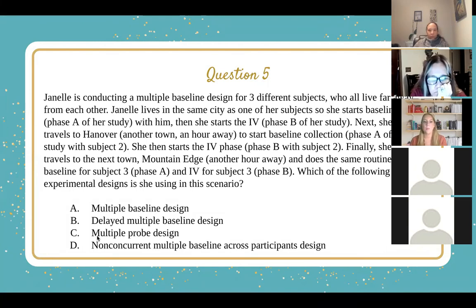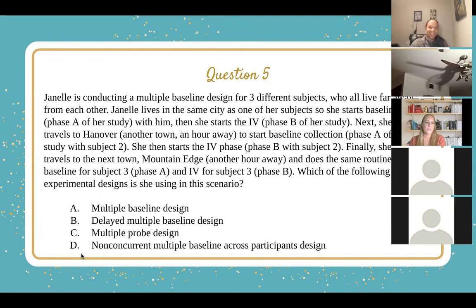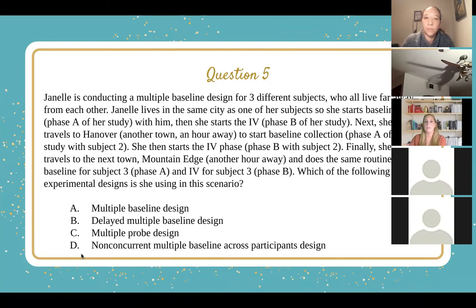A, multiple baseline. B, delayed multiple baseline. C, multiple probe design. Or D, non-concurrent multiple baseline across participants design. The answer is B, delayed multiple baseline, as there is a clear delay — she has to travel that hour before starting baseline collection for subjects two and three. The delay refers to the delay in starting baseline collection for each subsequent subject.